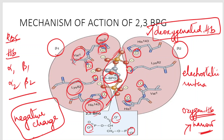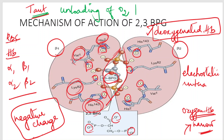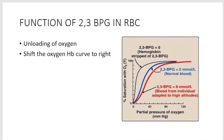2,3-bisphosphoglycerate stabilizes the taut (T) conformation of hemoglobin, squeezing the hemoglobin and causing unloading of oxygen to the peripheral tissues. Therefore, the primary function of 2,3-bisphosphoglycerate is delivery of oxygen to the peripheral tissues.